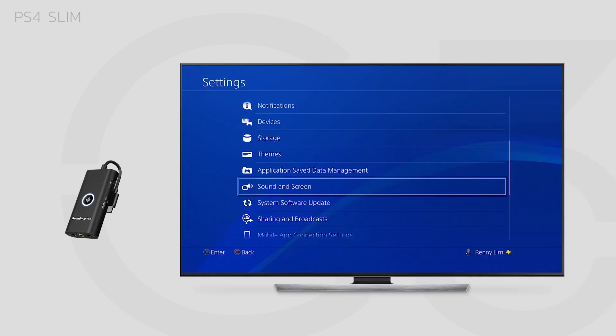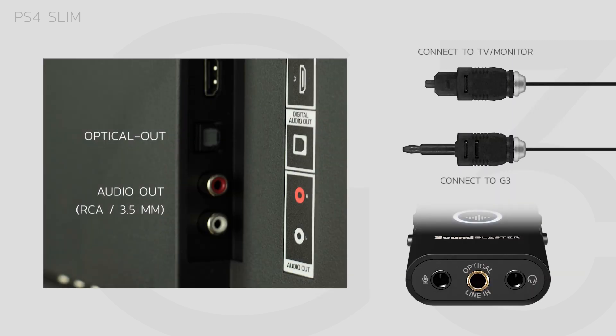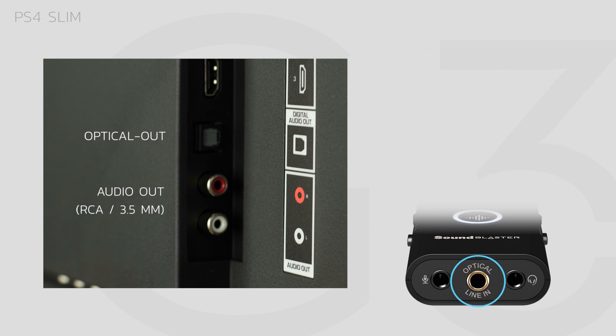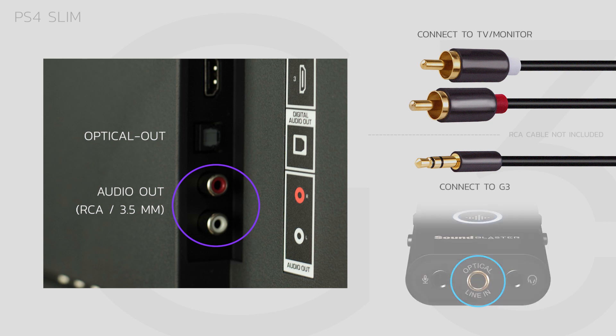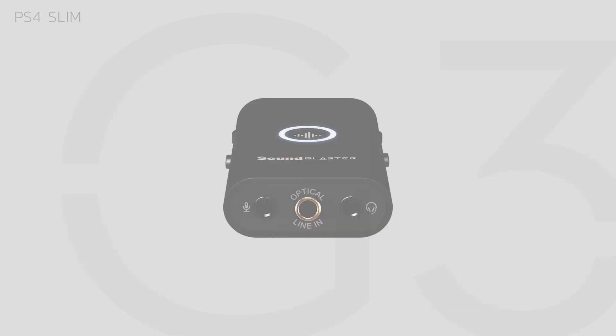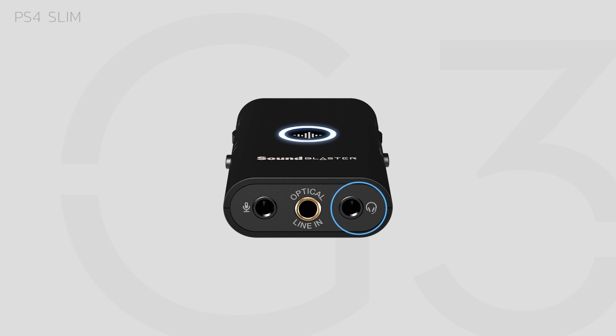Then, connect the G3 to your TV or monitor in order to deliver audio to the G3. You can do this via an optical port and the included optical cable, or through an RCA cable and a 3.5mm stereo cable. Finally, plug in your headphones to the G3 via the headphone port.